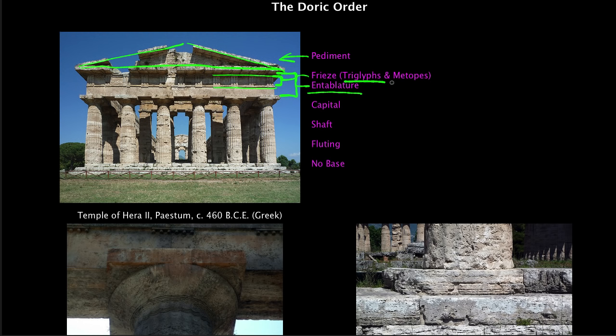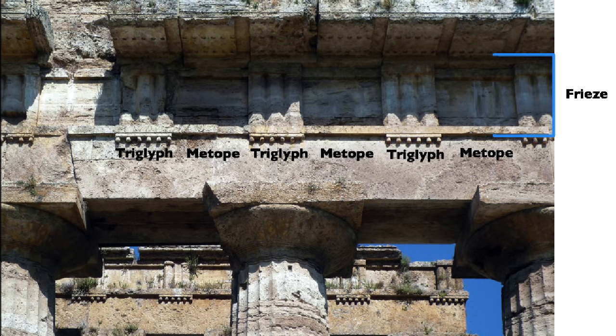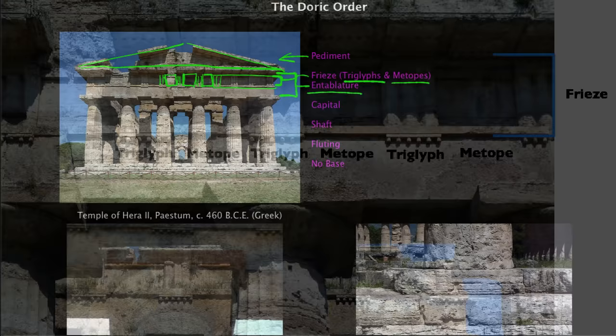In the Doric order, the frieze is decorated in a very specific way using triglyphs and metopes. The prefix 'tri' — just like tricycle — means three, and 'glyph' means marks, so a triglyph literally means three marks. You can see patterns of three marks moving all the way across the frieze. In between the triglyphs are spaces called metopes, which in ancient Greek architecture were often filled with sculpture.